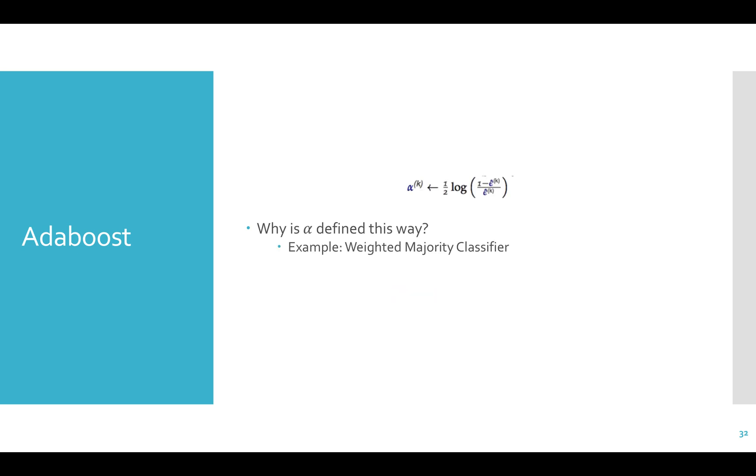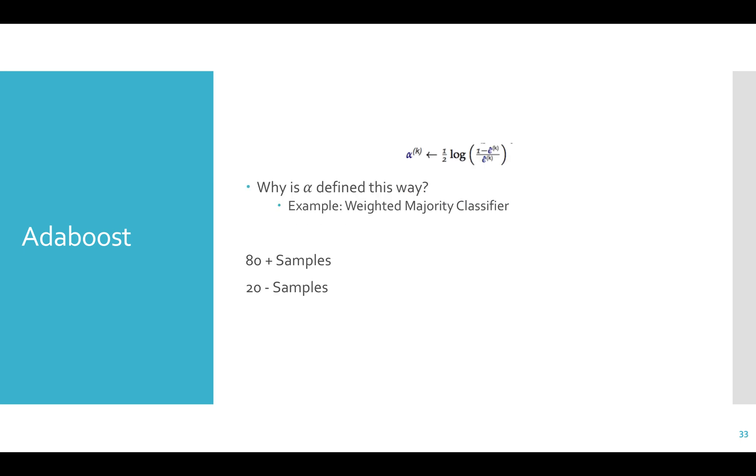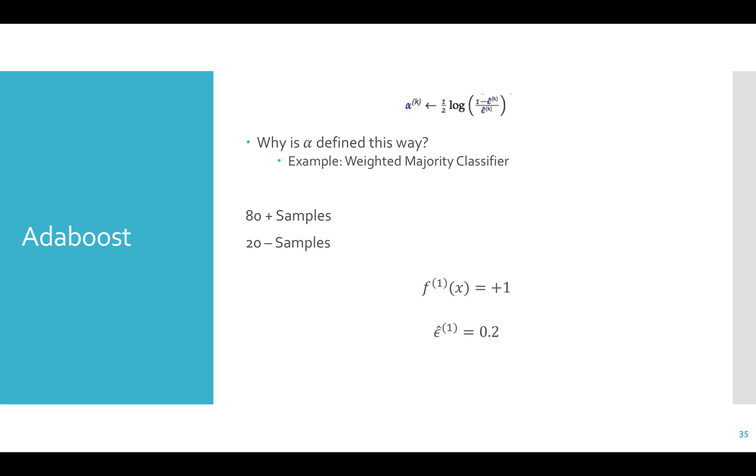To better understand why alpha is defined as it is, suppose that our weak learner simply returns a constant function that returns the weighted majority class. So if the total weight of positive examples exceeds that of negative examples, then we predict positive 1. Otherwise, we predict negative 1. To make the problem moderately interesting, suppose that in the original training set there are 80 positive examples and 20 negative examples. In this case, the classifier would predict positive 1. Its weighted error rate would be 0.2 because it gets every negative example wrong.